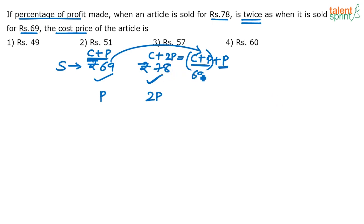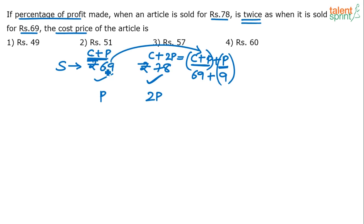We already know that c plus p equals 69. So can we say 78 equals 69 plus p? Yes — 78 equals 69 plus 9, because c plus p equals 69 from the first case. Breaking it up this way, it comes out very clearly that the profit p is 9 rupees. And if profit is 9 and c plus p equals 69, then c should be 60.